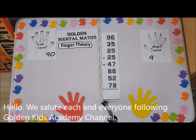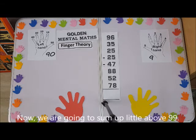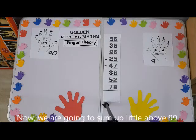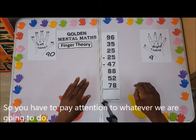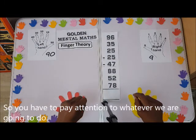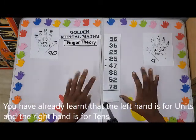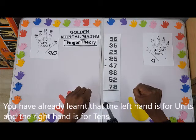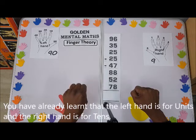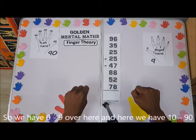Hello, we salute each and everyone following the Golden Case Academy channel. Now we're going to sum up a little above 99, so you have to pay attention. We have already learned that the left hand is for units and the right hand is for tens.